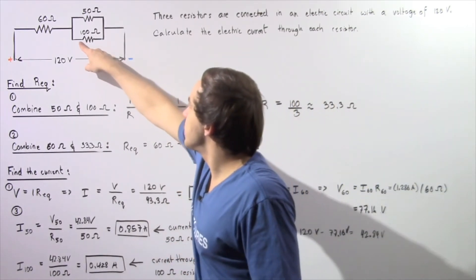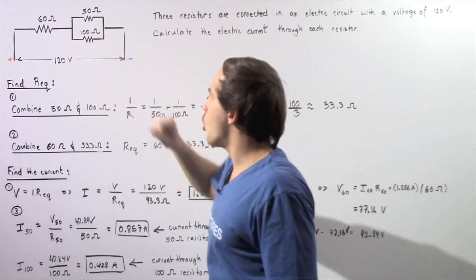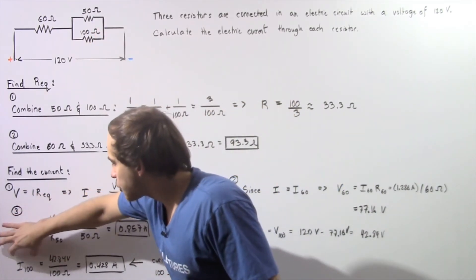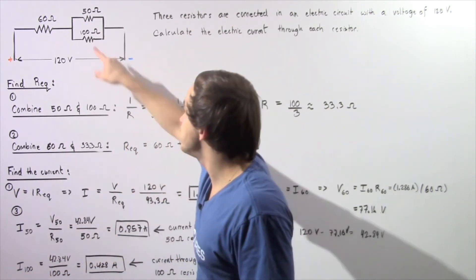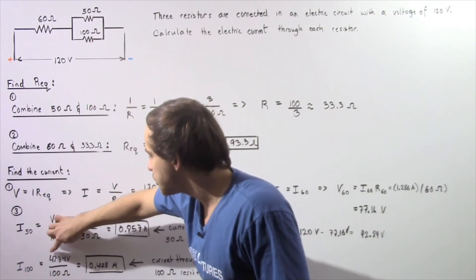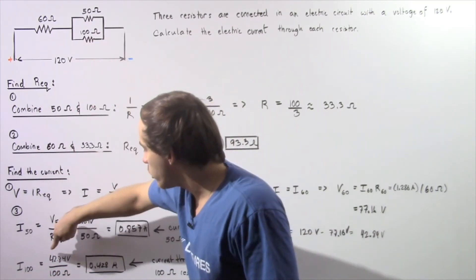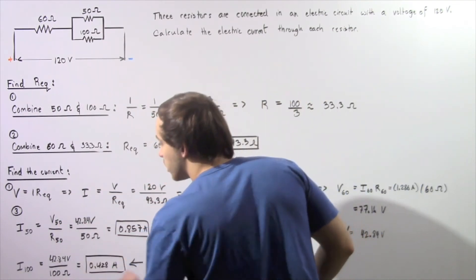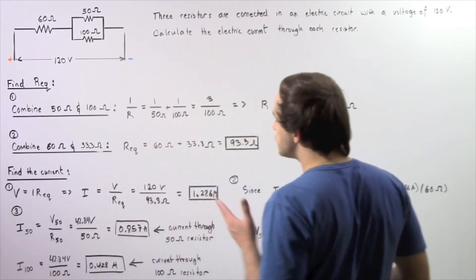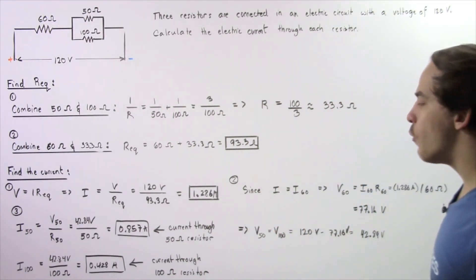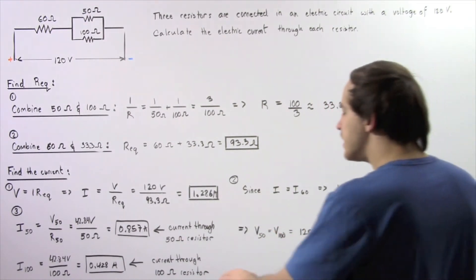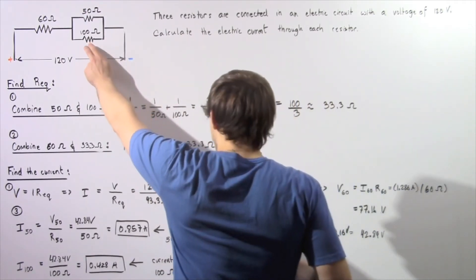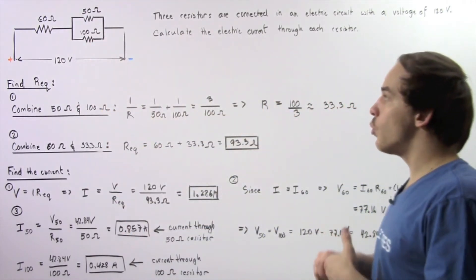To calculate the electric current through the 100 ohm resistor, we apply the same equation. The electric current through the 100 ohm resistor equals the voltage across that resistor — 42.84 volts — divided by the resistance of 100 ohms, which gives us about 0.428 amps. This is the electric current that flows through the 100 ohm resistor.